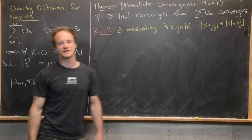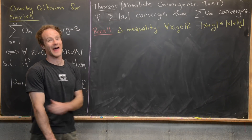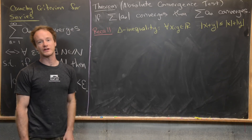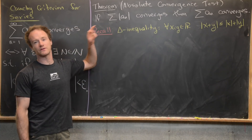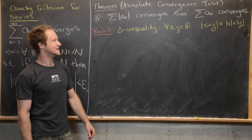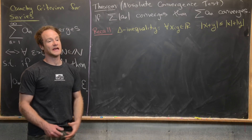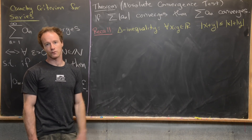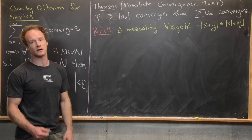Now we're ready to look at the absolute convergence test. It says that if the series formed by the absolute values |a_n| converges, then the original series of a_n also converges. When the series of |a_n| converges we say the original series absolutely converges. The converse is not true, and when a_n converges but |a_n| diverges, we say the series is conditionally convergent.